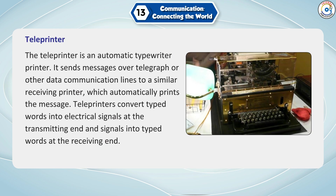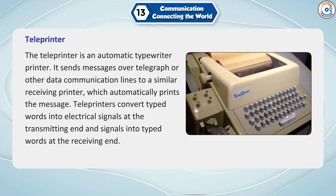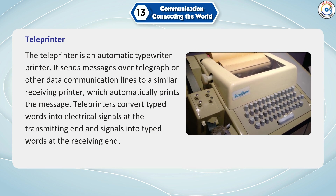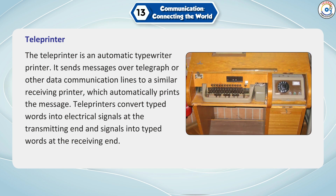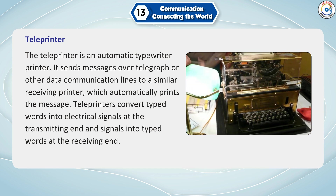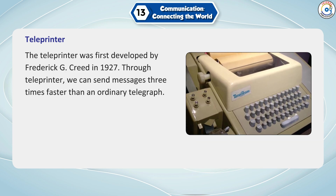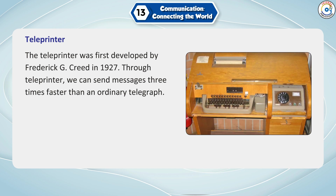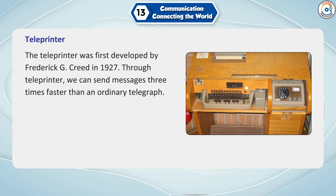The teleprinter is an automatic typewriter printer. It sends messages over telegraph or other data communication lines to a similar receiving printer, which automatically prints the message. Teleprinters convert typed words into electrical signals at the transmitting end and signals into typed words at the receiving end. The teleprinter was first developed by Frederick G. Creed in 1927. Through the teleprinter, we can send messages three times faster than an ordinary telegraph.